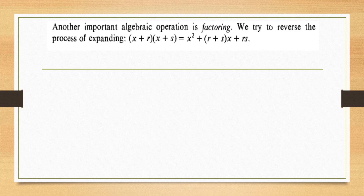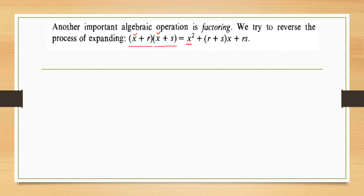Here is another expression. If we have to multiply two factors such that the first term is the same but the second terms in both factors are different, the answer will be the square of the first term, plus the product of the first term with the sum of the second terms, plus the product of the second terms in both factors.